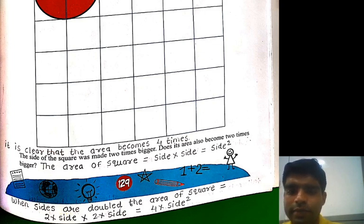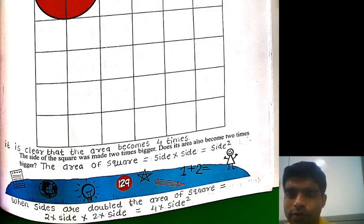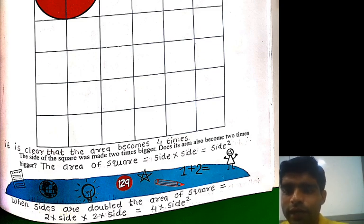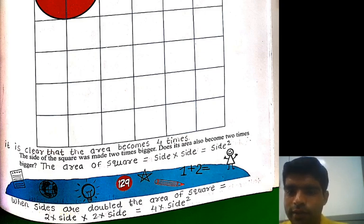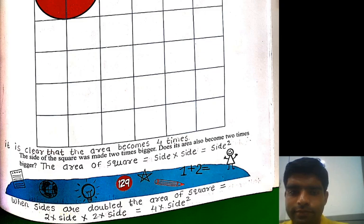It is clear that the area becomes four times bigger when the side is doubled. Because area = side × side = side², and when the side is doubled: 2 × side × 2 × side = 4 × side². So the area becomes four times the original.